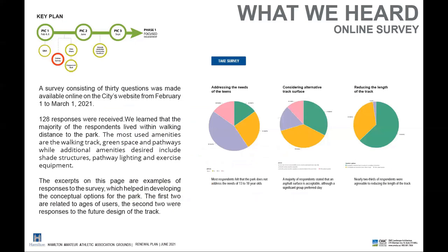Another exercise completed post-PIC: we opened up a survey with 30 questions, and we had 128 respondents complete it. We consolidated those results — you can see the pie graphs shown on screen as a representation of some of the results. We learned that the majority of respondents live within walking distance to the park. The most used amenities within the park are the walking track, green space, and pathways, while additional amenities desired include shade structures, pathway lighting, and exercise equipment. That survey information and results will be available on the website after this weekend.